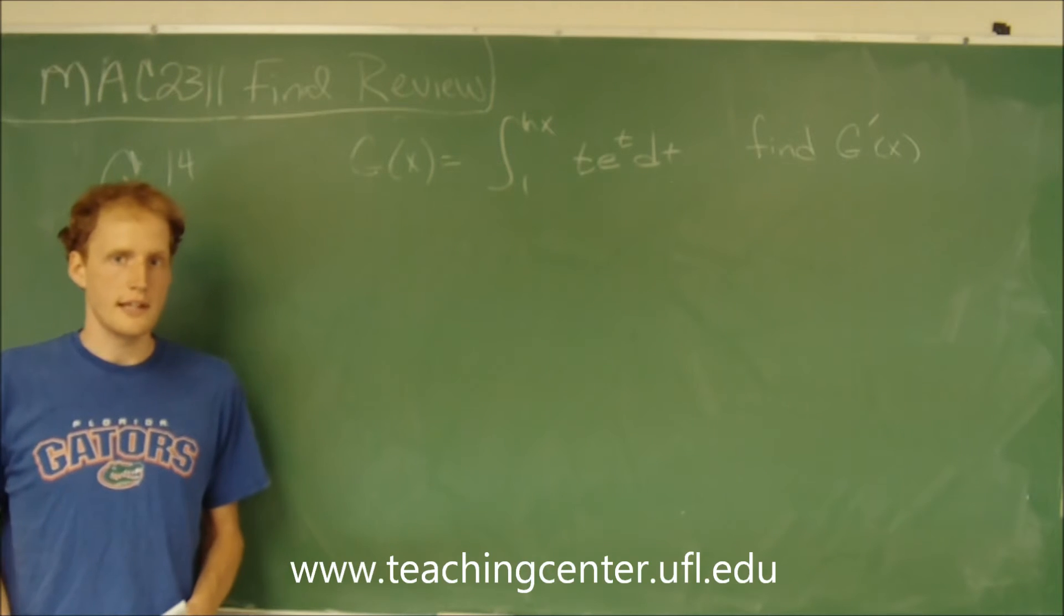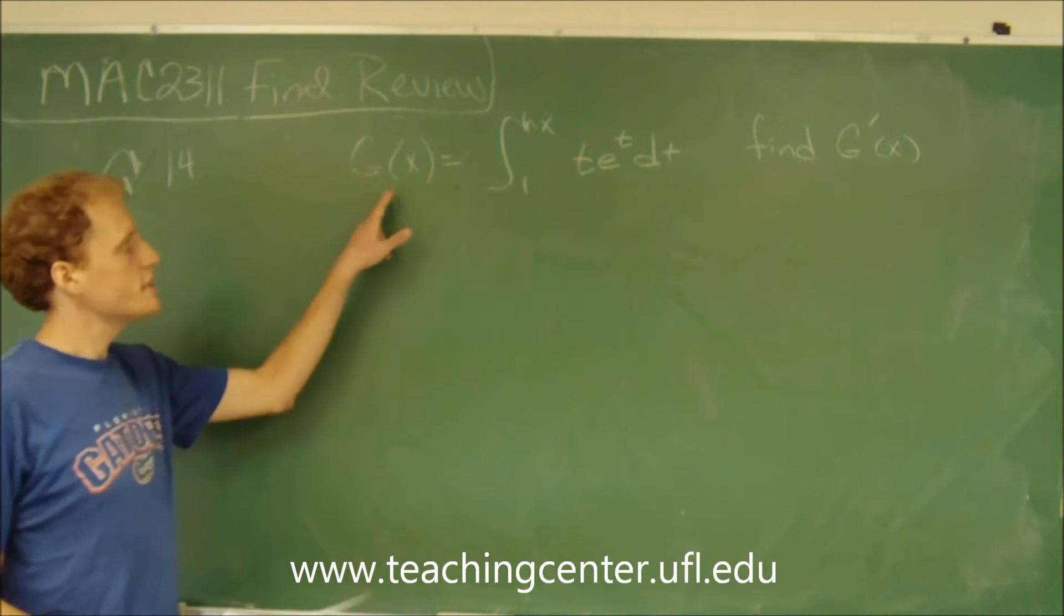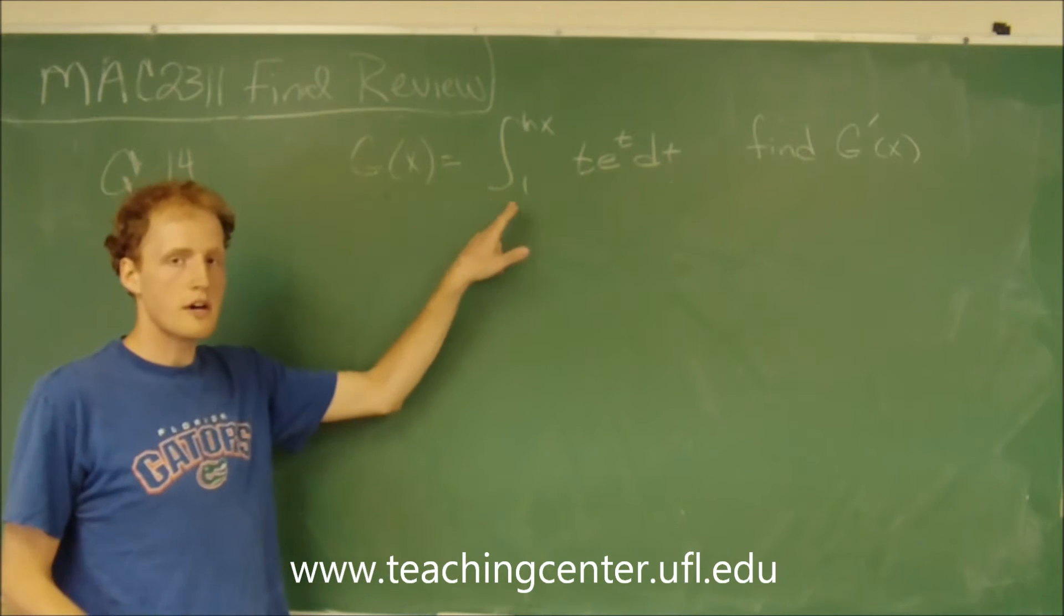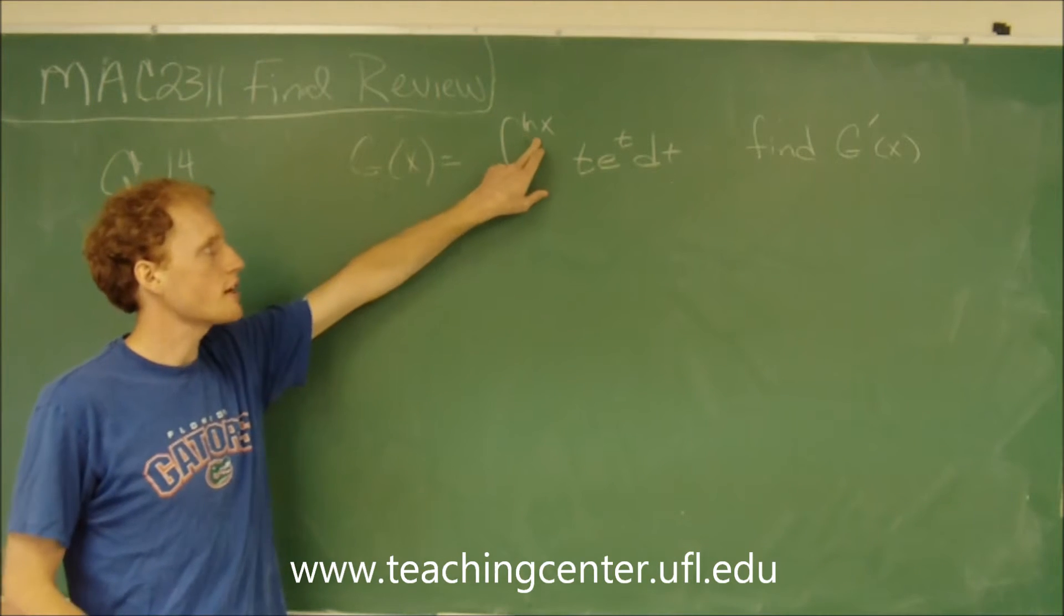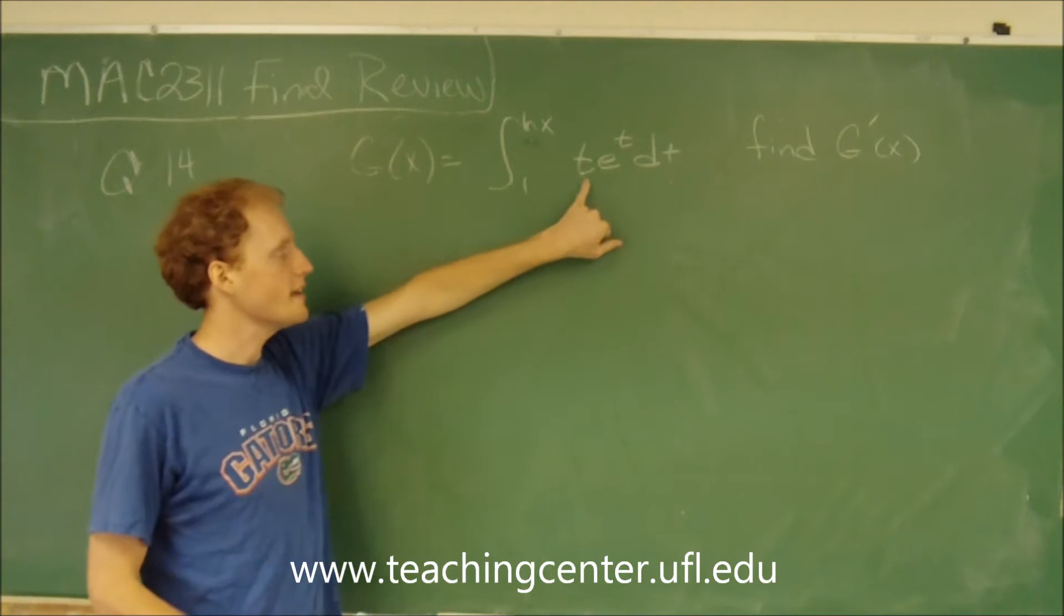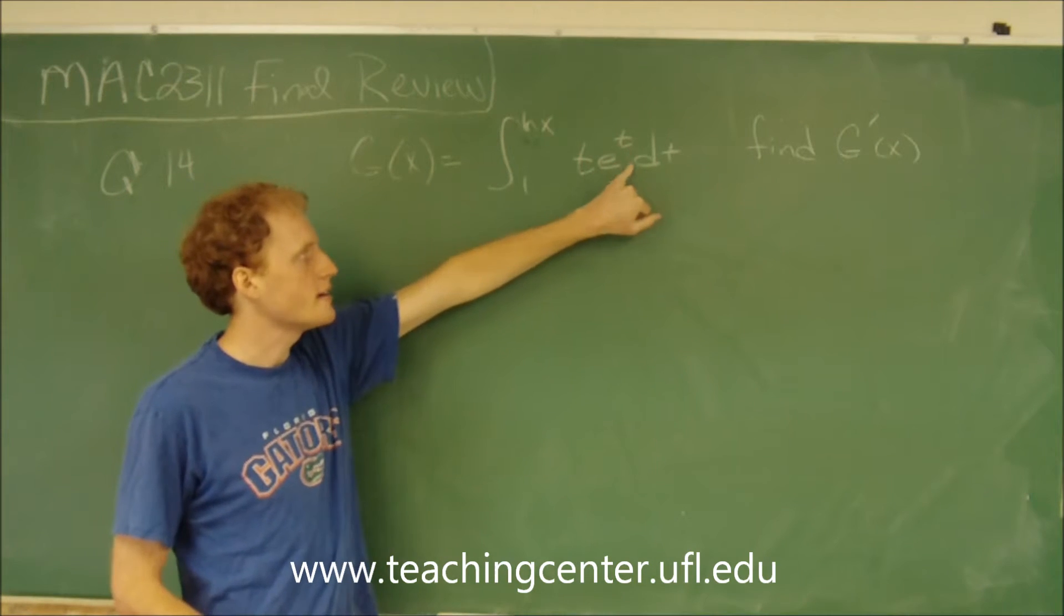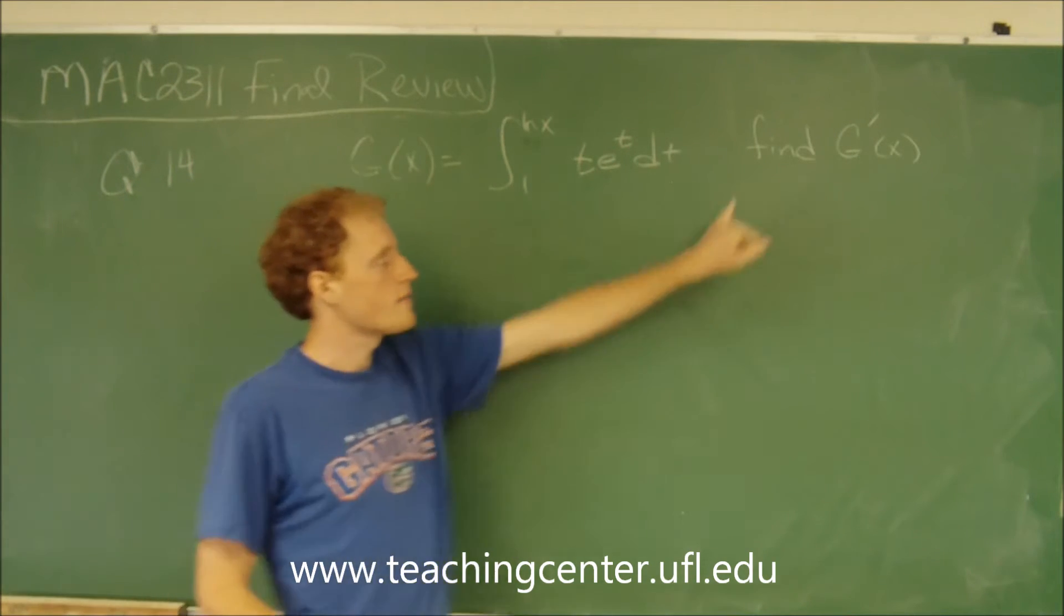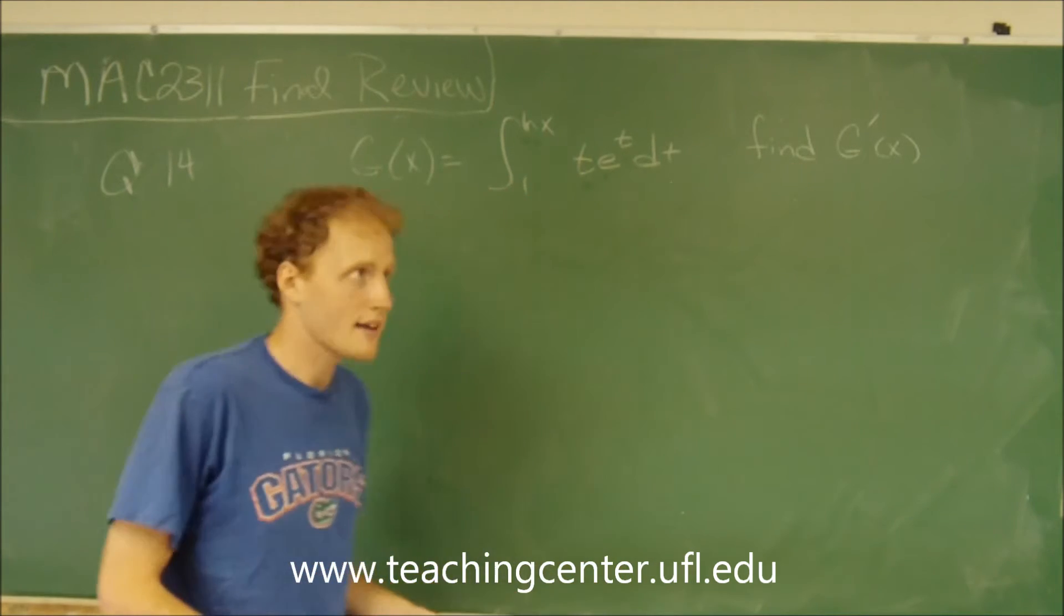This is question number 14. If g(x) equals the integral from 1 to the natural log of x of t times e to the t dt, find g prime of x.